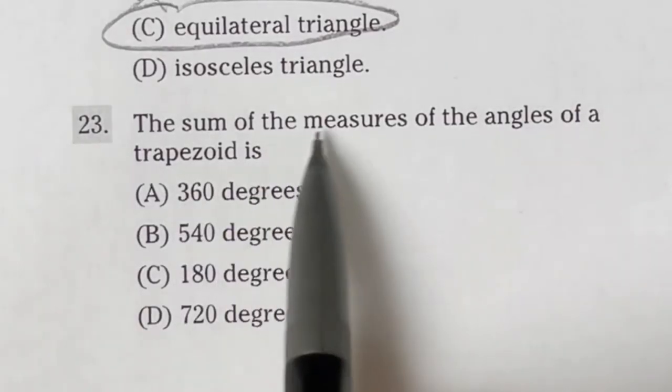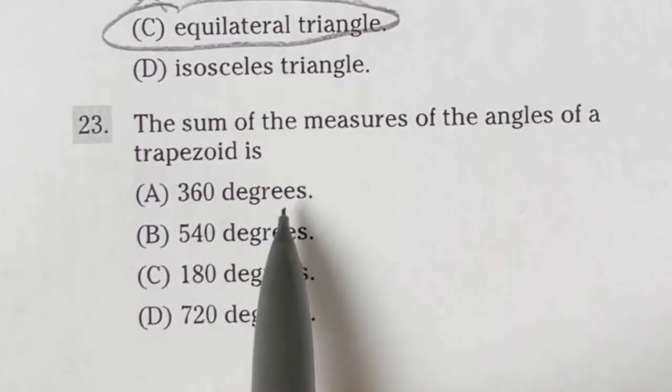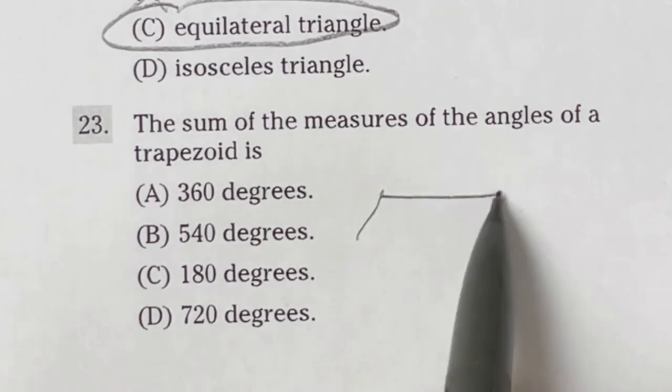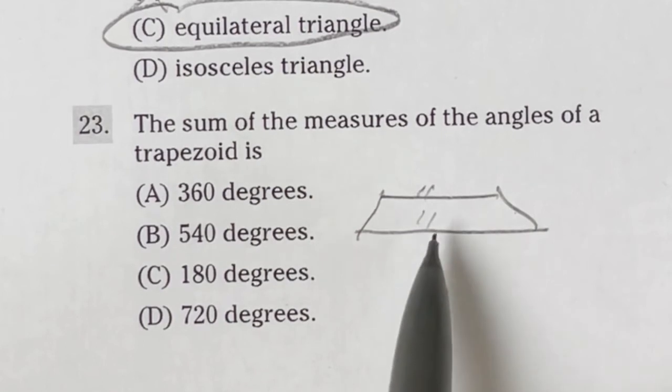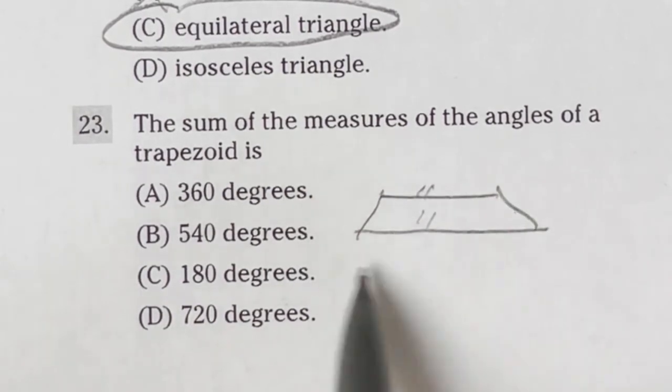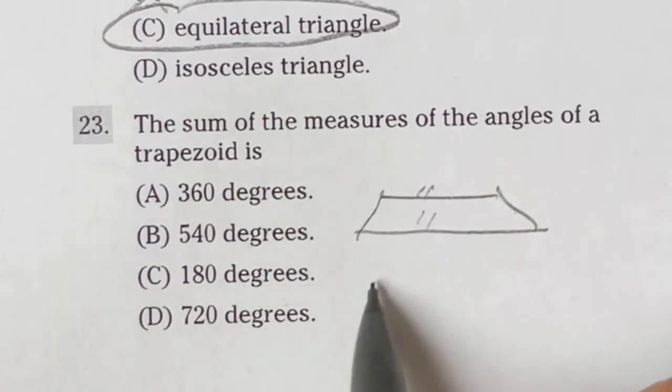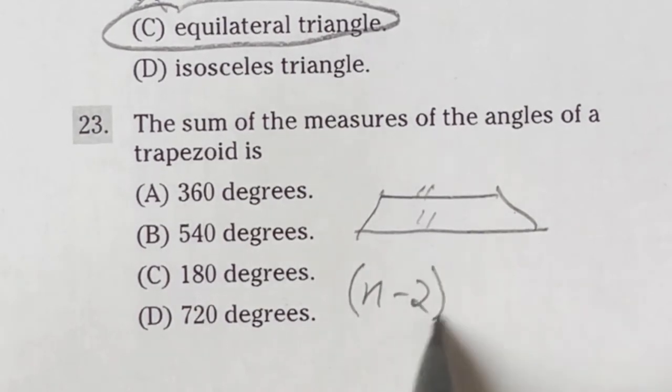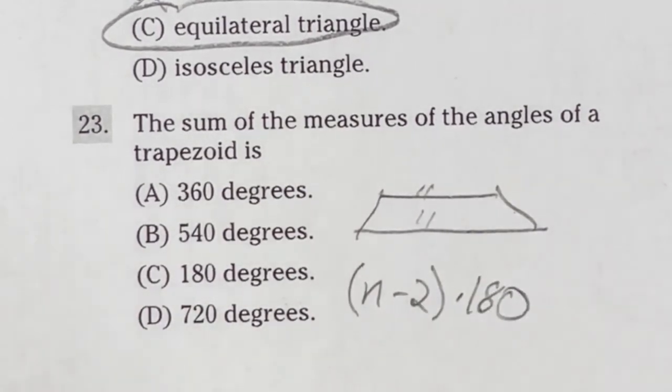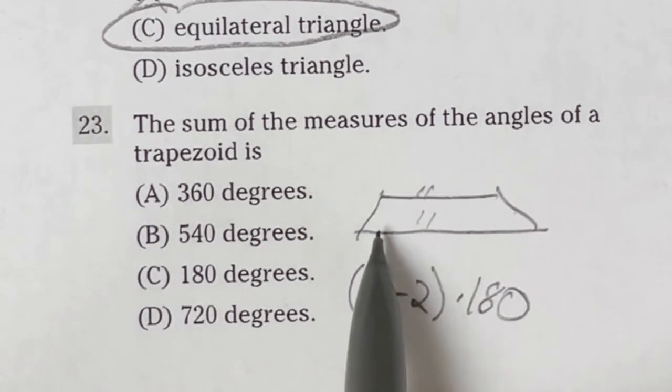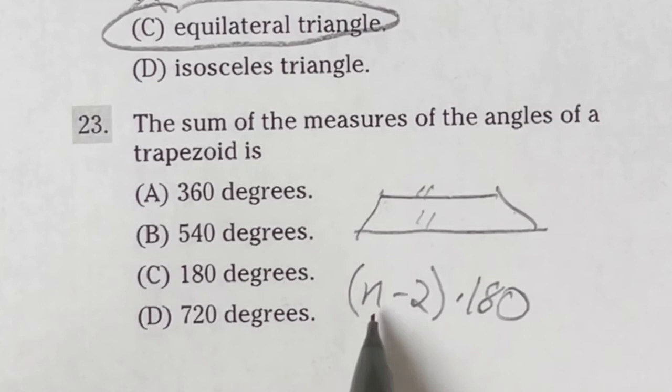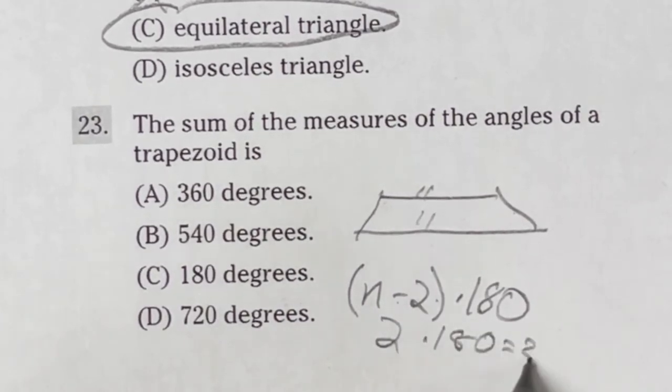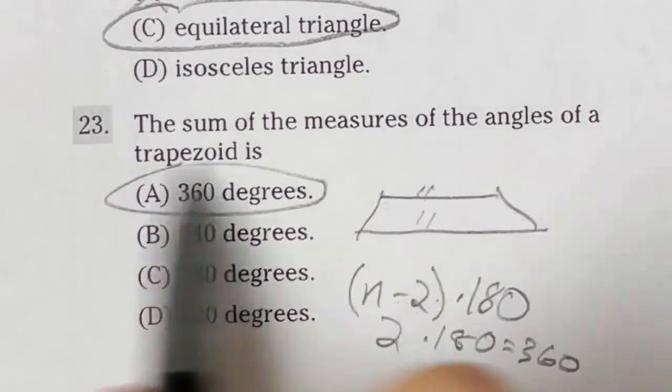Number 23 says, the sum of the measures of the angles of a trapezoid is blank. So remember, a trapezoid just means that two sides of this thing is parallel, so we'll say this guy's parallel to this side. Really, all we need to know is that this is a four-sided figure, and there's a formula that says if you take the number of sides minus 2 and multiply that by 180, it will give you the total sum of the interior angles of that figure. So in this case, we have a four-sided figure. 4 minus 2 is just 2, and 2 times 180 is 360, which means our answer is A.